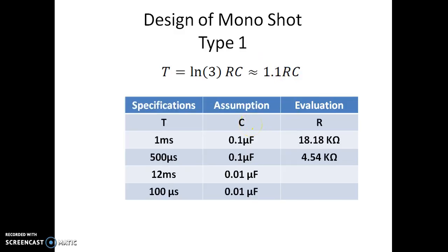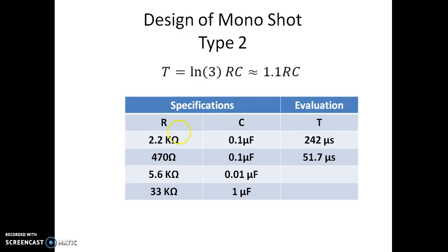In Type 2 design, the values of R and C are given and we estimate the pulse width. With R = 2.2 kΩ and C = 0.1 µF, T = 1.1 × 2.2k × 0.1µ = 242 µs. In the second design, with R = 470 Ω and C = 0.1 µF, T = 51.7 µs. Students can similarly find the pulse width for R = 5.6 kΩ with C = 0.01 µF and other given combinations.